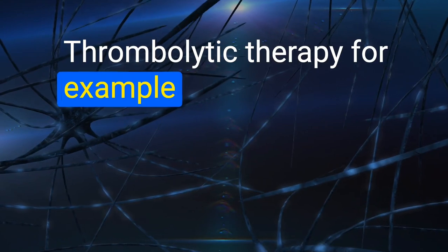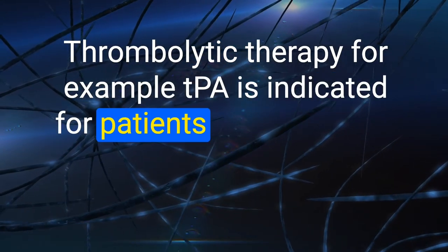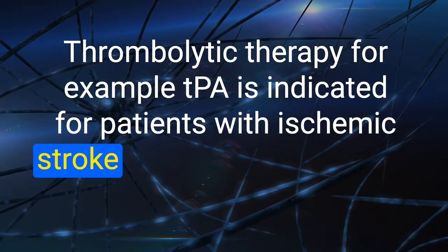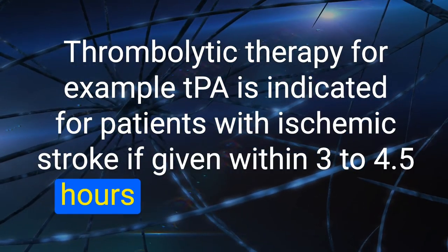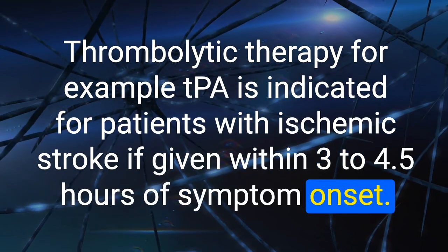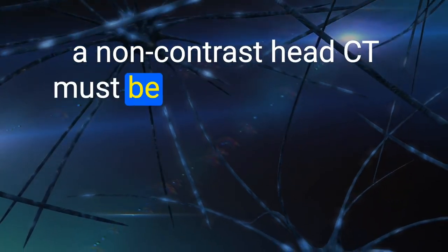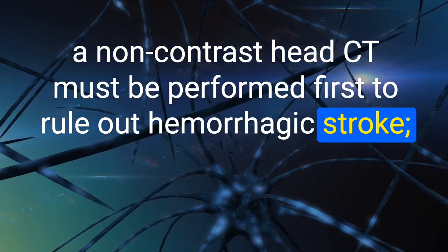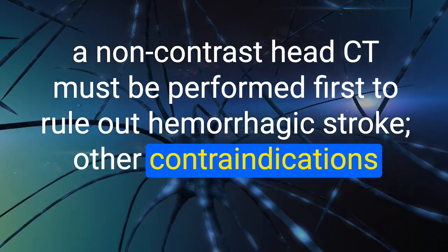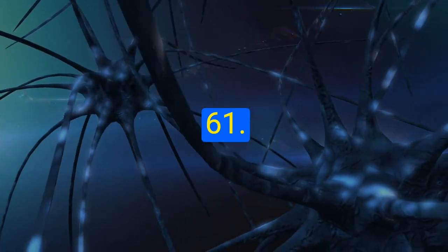60. Thrombolytic therapy (e.g., tPA) is indicated for patients with ischemic stroke if given within 3 to 4.5 hours of symptom onset. A non-contrast head CT must be performed first to rule out hemorrhagic stroke. Other contraindications are listed.